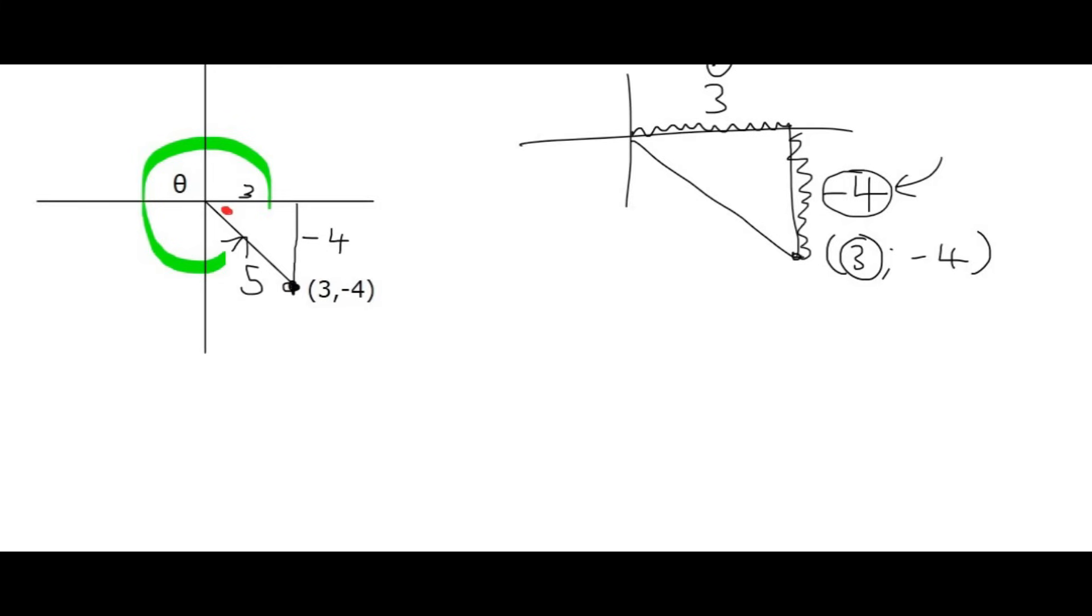And so now we can work out the sin, cos, and tan. So we say sin theta. Now notice I'm saying sin theta, and technically theta is this big angle on the outside, but we still have to call it sin theta. But we're going to use this little red angle to do the calculations. And so sin is always equal to the opposite, which is negative 4, over the hypotenuse, which is 5.